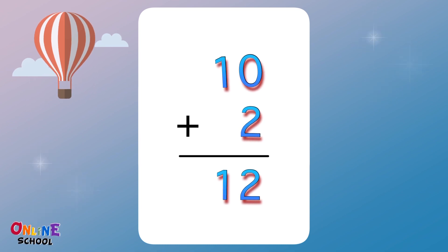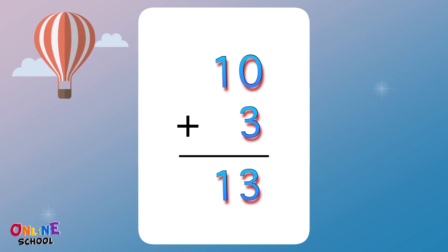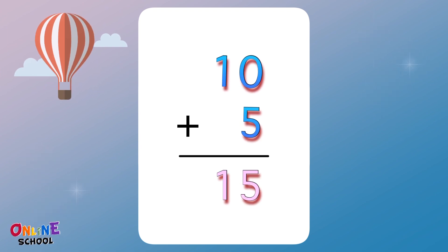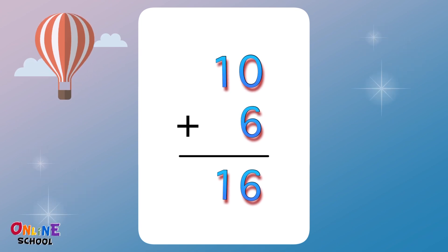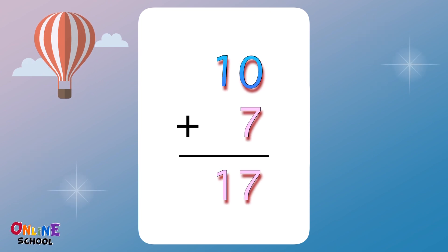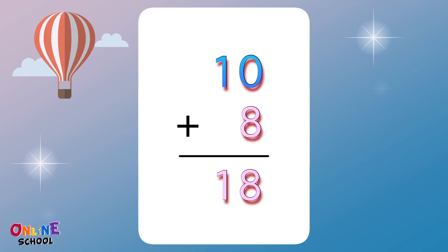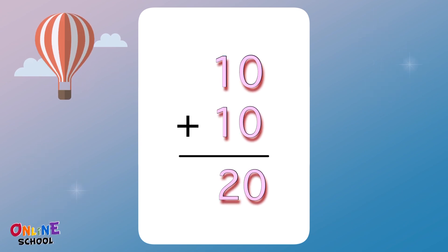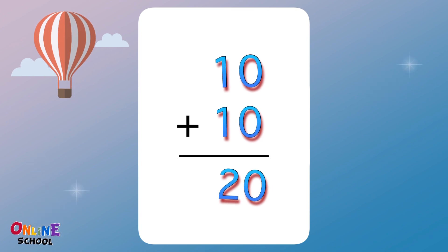Table 10: 10 plus 1 equals 11, 10 plus 2 equals 12, 10 plus 3 equals 13, 10 plus 4 equals 14, 10 plus 5 equals 15, 10 plus 6 equals 16, 10 plus 7 equals 17, 10 plus 8 equals 18, 10 plus 9 equals 19, 10 plus 10 equals 20.